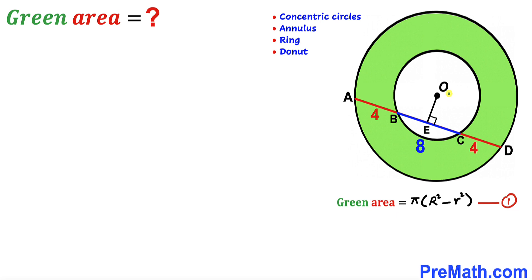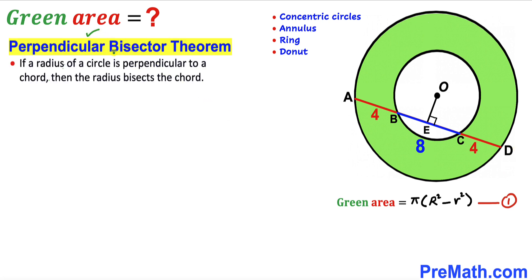I have dropped a perpendicular OE onto chord AD. According to the perpendicular bisector theorem, if a radius of a circle is perpendicular to a chord, then the radius bisects the chord. So this radius bisects chord BC into two equal parts: BE = 4 and EC = 4, since the whole chord BC is 8 units.